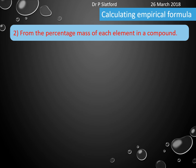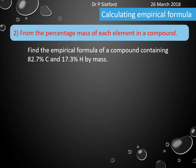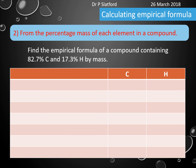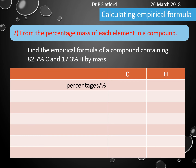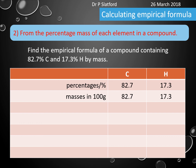Let's look at the second way of working this out — using the percentage mass of each element in a compound. You might have a question like: find the empirical formula of a compound containing 82.7% carbon and 17.3% hydrogen. We draw a table again with carbon and hydrogen, and write in the percentages from the question. We then assume we have 100 grams of the compound — we choose 100 grams because it's convenient mathematically — meaning we have 82.7 grams of carbon and 17.3 grams of hydrogen.